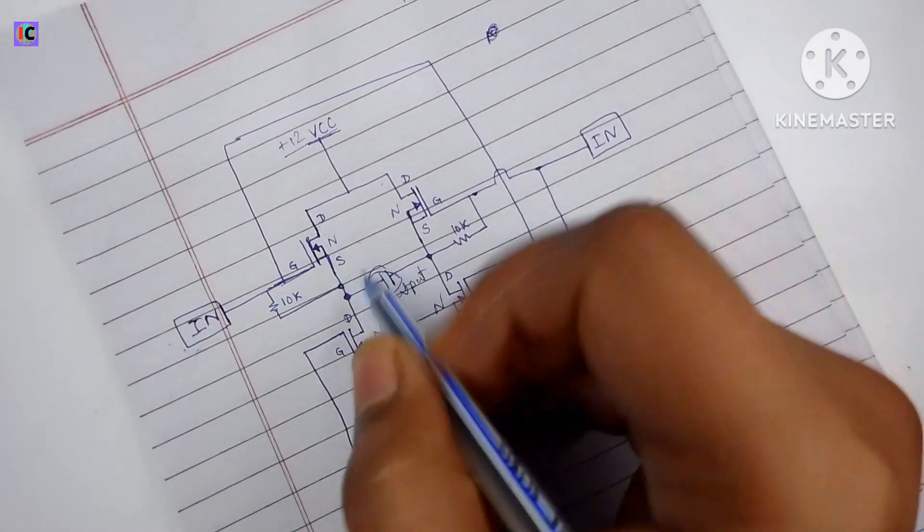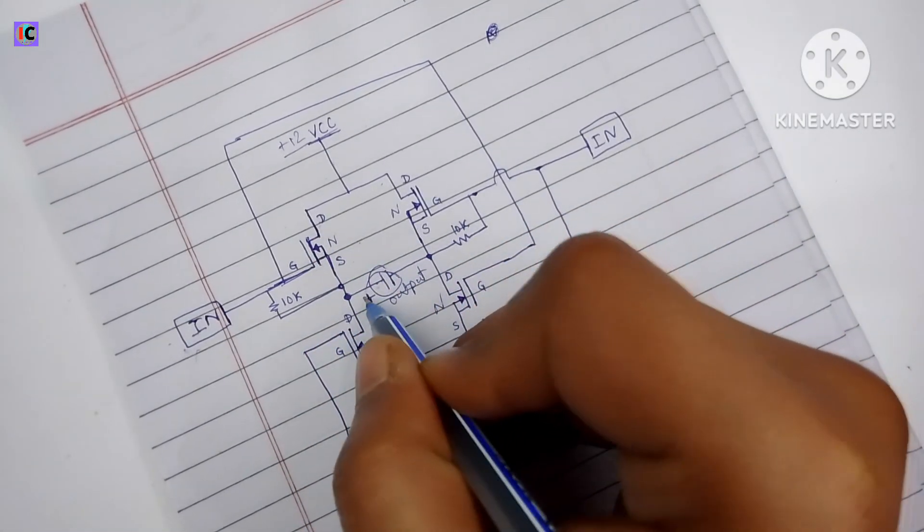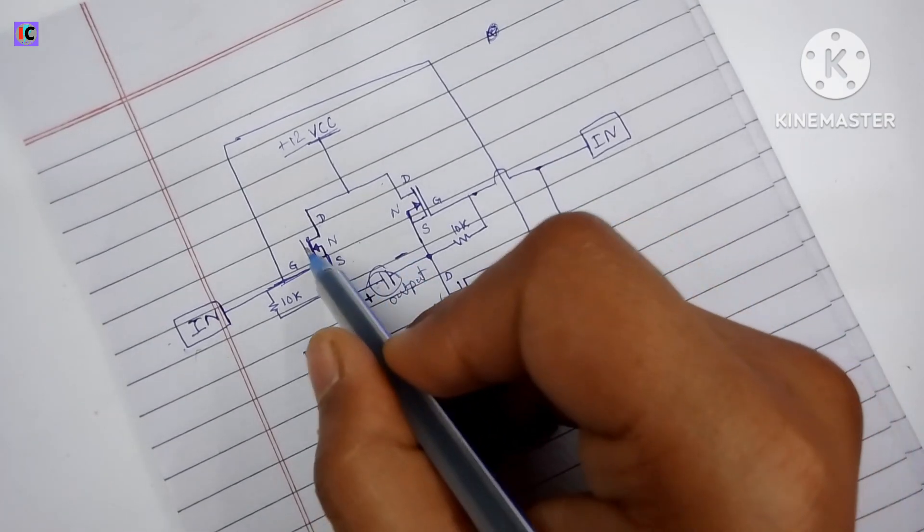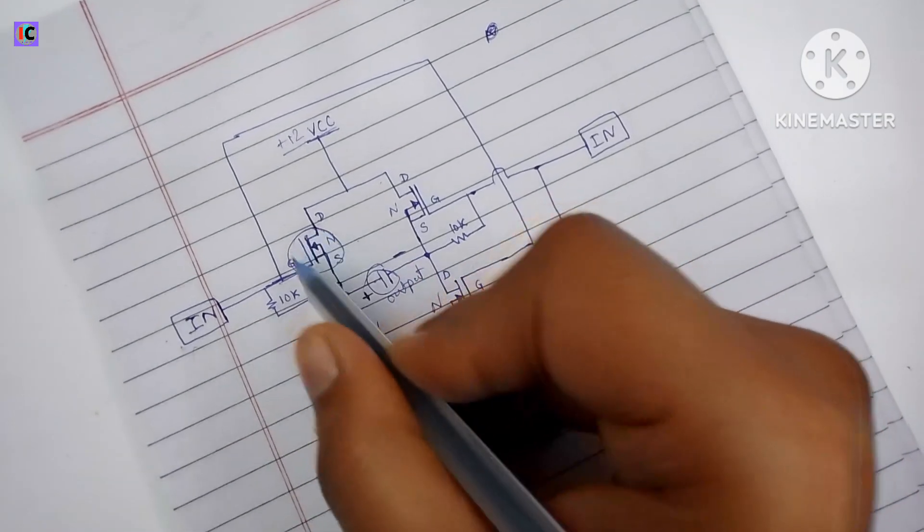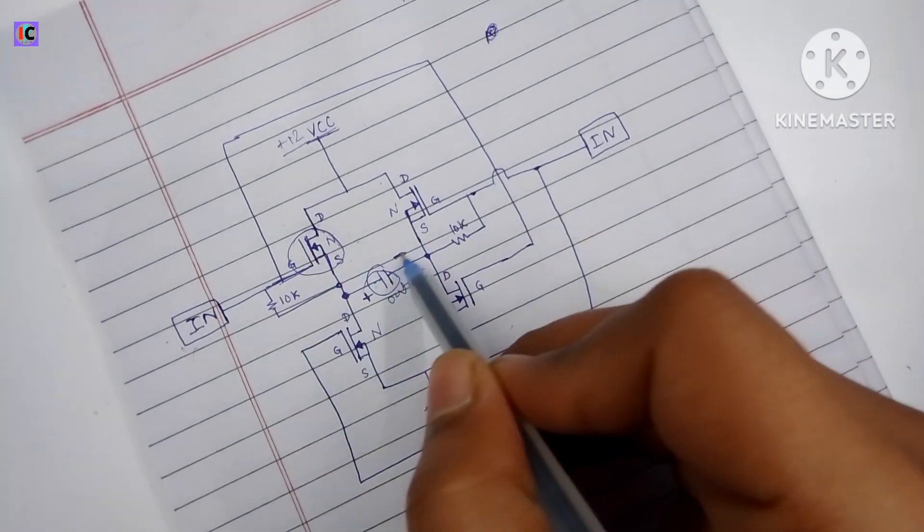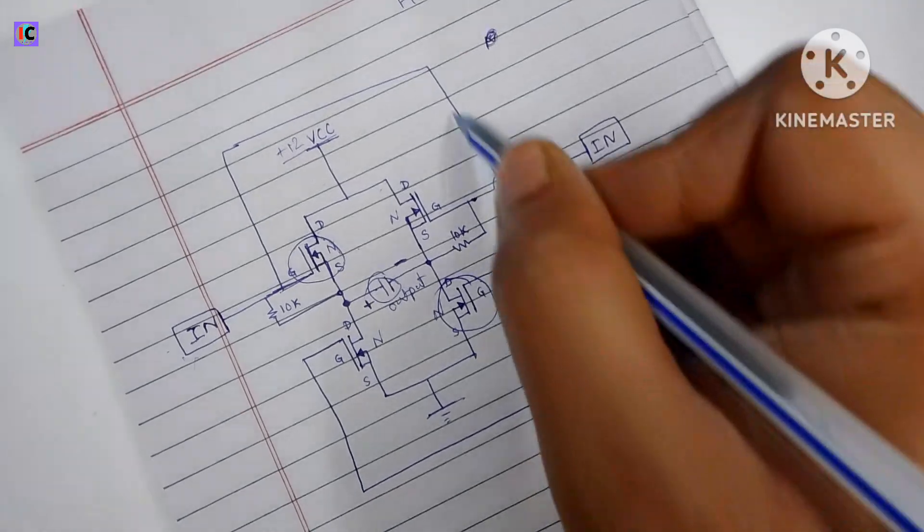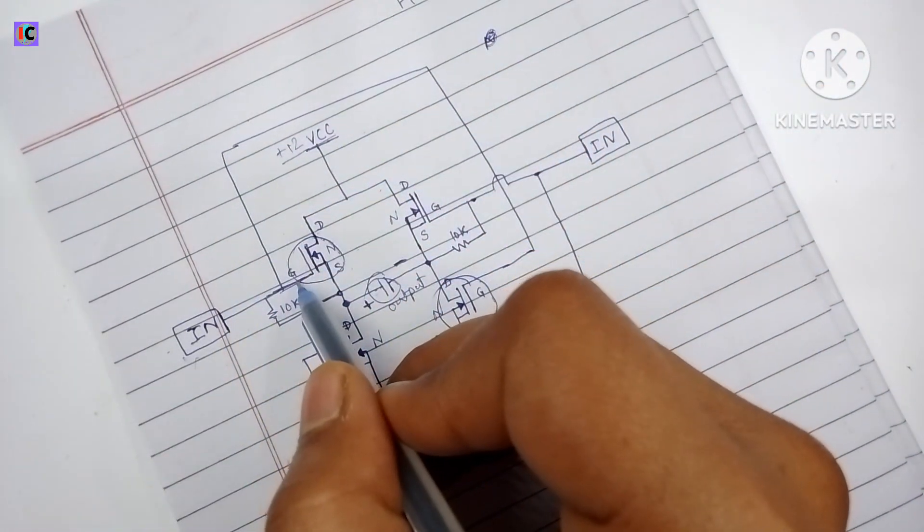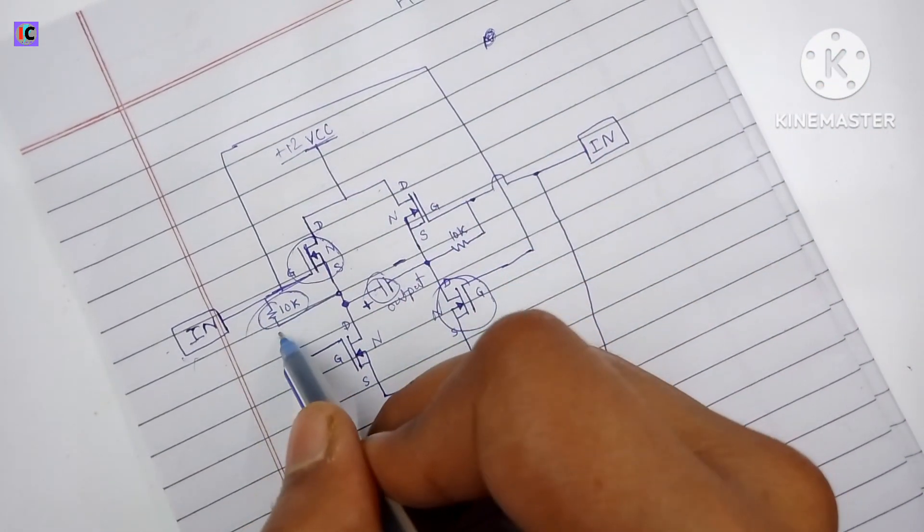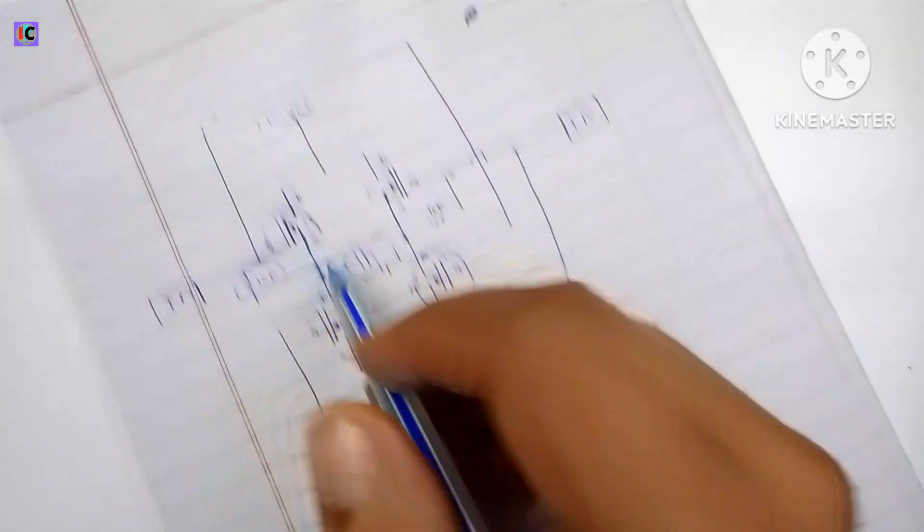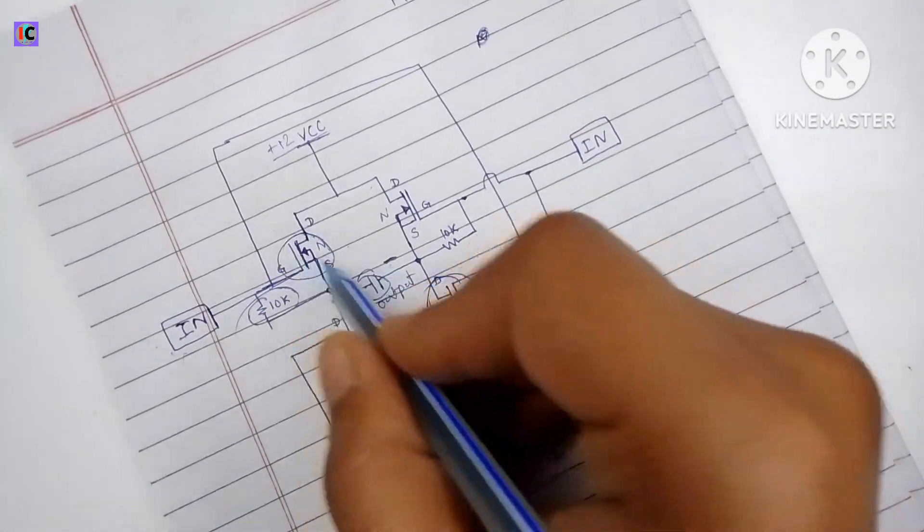Here you can see I am using four N-channel MOSFETs. For the working, first we have to see the connections. In the output section we have a positive and negative cycle, so if we want to give some signal at the output, we need to connect the MOSFETs diagonally.